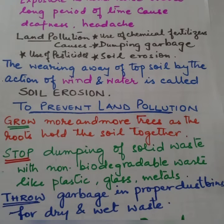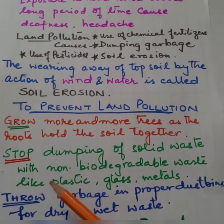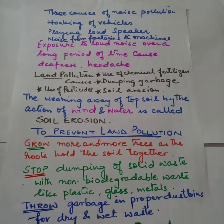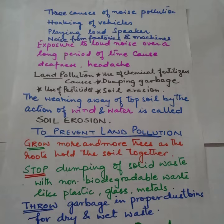To prevent land pollution: grow more and more trees, as the roots hold the soil together — ज़्यादा से ज़्यादा trees grow करो ताकि roots मिट्टी को जकड़ के रखें और top layer जिसमें humus है वो soil से हट न जाए। Stop dumping solid waste — non-biodegradable waste like plastic, glass, and metals — यह अगर जमीन में रह जाए तो land pollution create करता है, इसको हमें नहीं फेंकना चाहिए। Throw garbage in proper dustbins for dry and wet waste separately.